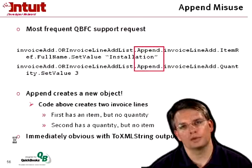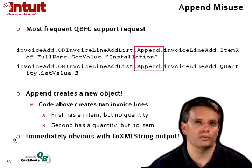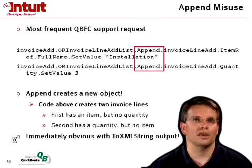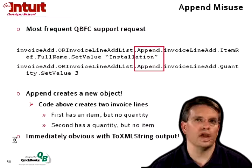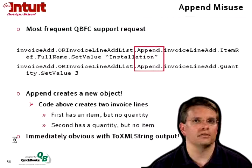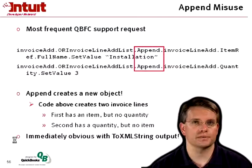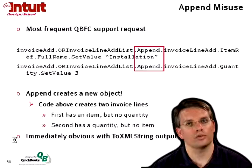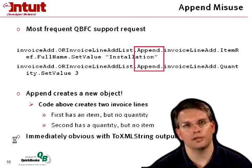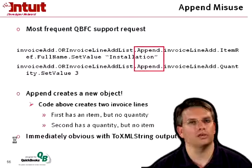I wanted to talk about one of the most common problems in QBFC. This is probably the most frequent support request. That is the use, or misuse, of the append function. Here we see invoice add, and append an invoice line add, immediately setting the item ref to installation. And then we do it again — append, immediately setting the quantity to three. This looks pretty straightforward, but the append function always creates a new object. So the code above is really creating two invoice lines. The first one has an item but no quantity, and the second has a quantity but no item.